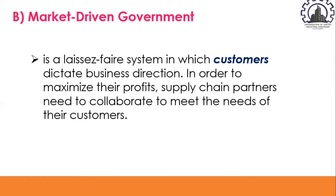On the other hand, a market-driven government refers to democracy — a laissez-faire system in which customers dictate business direction. In order to maximize profits, supply chain partners need to collaborate to meet the needs of their customers. For instance, to attract customers via personalized service, Dell created the direct-sale business model, where customers can order computers directly from Dell and have products delivered from one of its manufacturers. Dell created a direct link with its manufacturers to avoid extra tiers in the supply chain, resulting in increased customer satisfaction and cost savings.